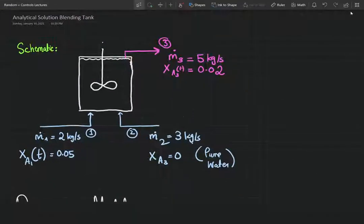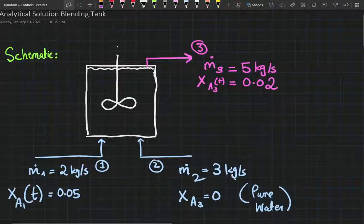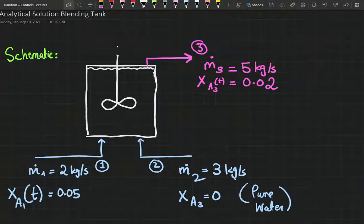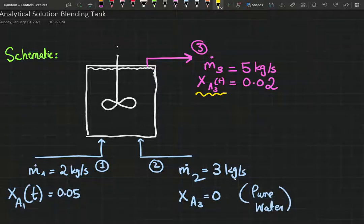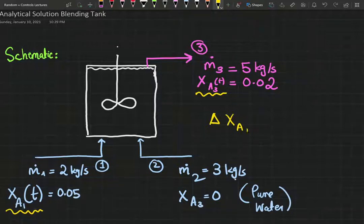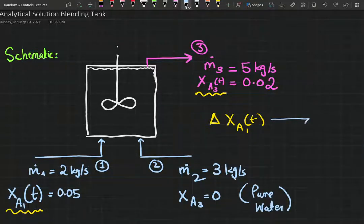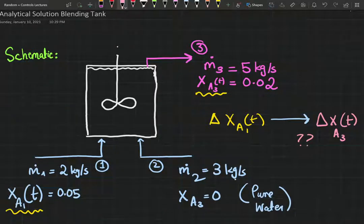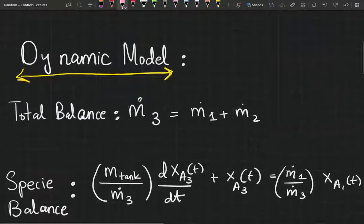Welcome back everyone. In this video we're going to look at an analytical solution to this blending tank problem. Just to give you guys a refresher, I'm looking for deviations in my outlet concentration due to deviations in my inlet concentration. That's the model I'm trying to implement here — I want to see how changes in X_a1, my inlet concentration, affect my outlet concentration.